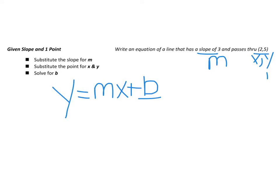So we have a Y here of 5. So 5 is equal to a slope of 3. Our X was 2 plus B. 3 times 2 is 6.